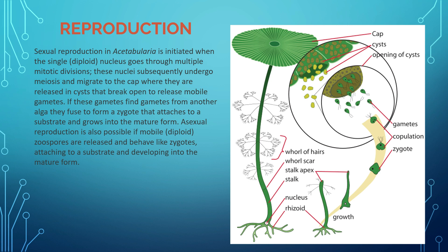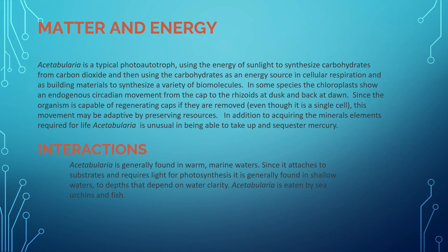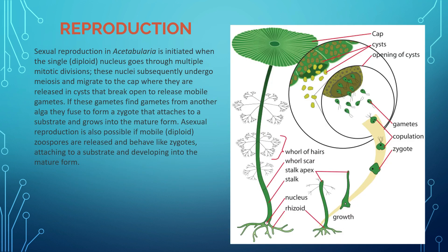The zygote attaches to a suitable substratum and, under suitable conditions, matures and grows independently into an individual organism. This is sexual reproduction. Asexual reproduction also occurs in Acetabularia: some diploid gametes have flagella, called zoospores, and are directly released from the organism. They are dispersed through mechanical means like wind, water, and rain, then attach to a suitable substratum and grow into individual organisms.